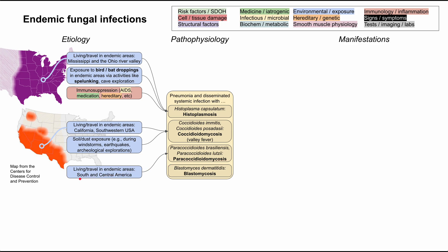Paracoccidiomycosis is associated with South and Central America, largely areas of Brazil. This one is interesting because it's much more prevalent in men than in women — there's a 15-fold difference between men and women, so men are much more likely to get paracoccidiomycosis.